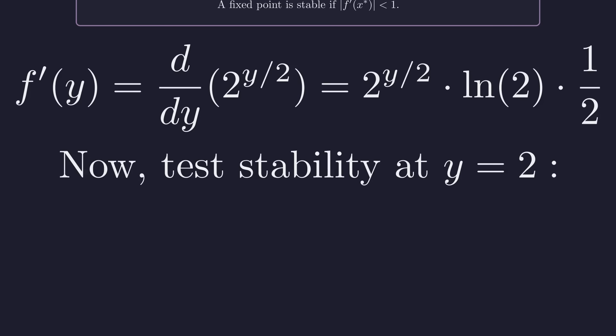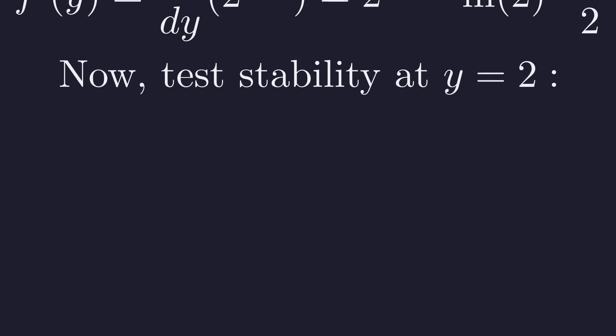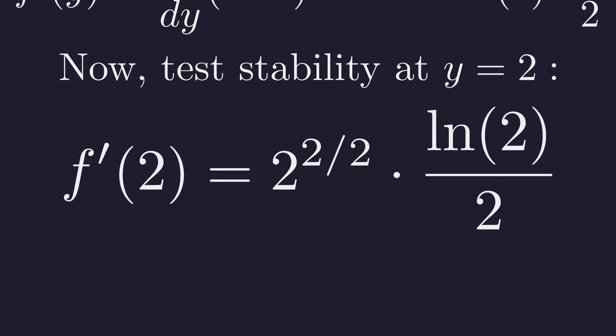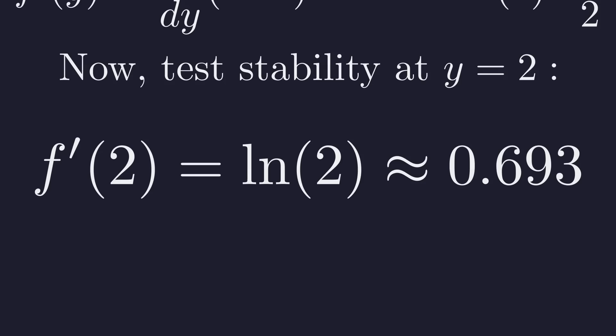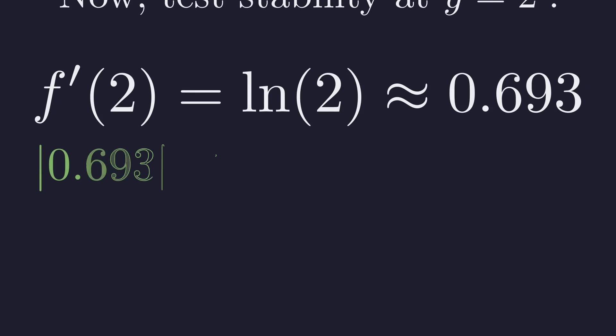Now, let's test the stability of our first solution, y equals 2. We substitute 2 into the derivative function. The exponent simplifies. 2 divided by 2 is 1. Next, we can cancel the 2's. This leaves us with the natural log of 2, which is approximately 0.693. The absolute value of this result is less than 1. Therefore, the solution y equals 2 is stable.